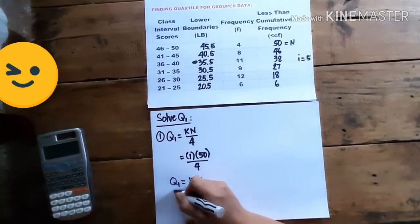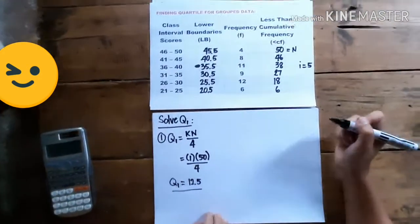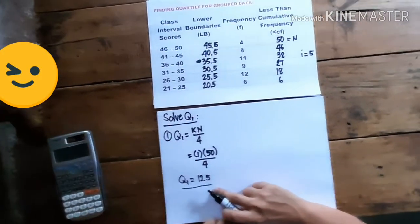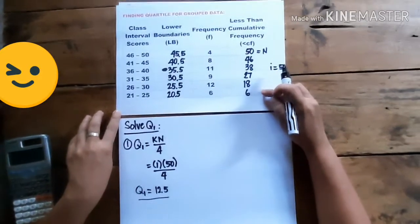Okay, so quartile 1 is the 12.5th score, and we need to locate it based on the cumulative frequency.